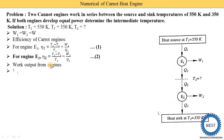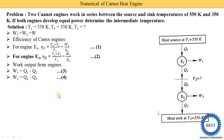Work output from engine one is W1 = Q1 minus Q2 — equation number three. Work output from engine two is W2 = Q2 minus Q3, meaning engine two receives Q2 and rejects Q3 — this is equation number four.